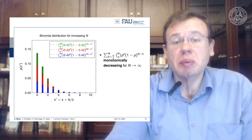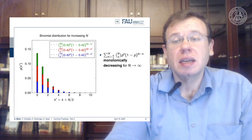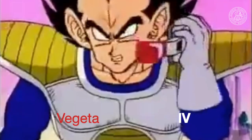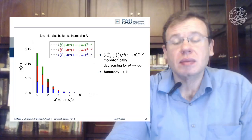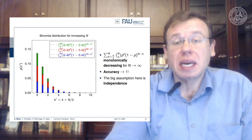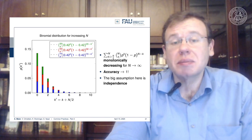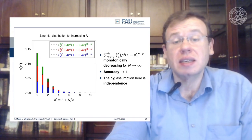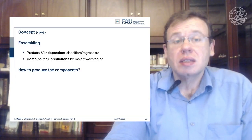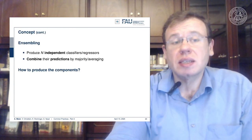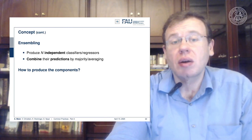This probability is monotonically decreasing for large n, so as n approaches infinity the accuracy goes towards 1. The big problem, of course, is the independence assumption — we typically have problems generating independent classifiers from the same data. If we had enough data, we could train many independent weak classifiers. So how do we implement this? We produce n independent classifiers or regressors and combine their predictions by majority vote or averaging.